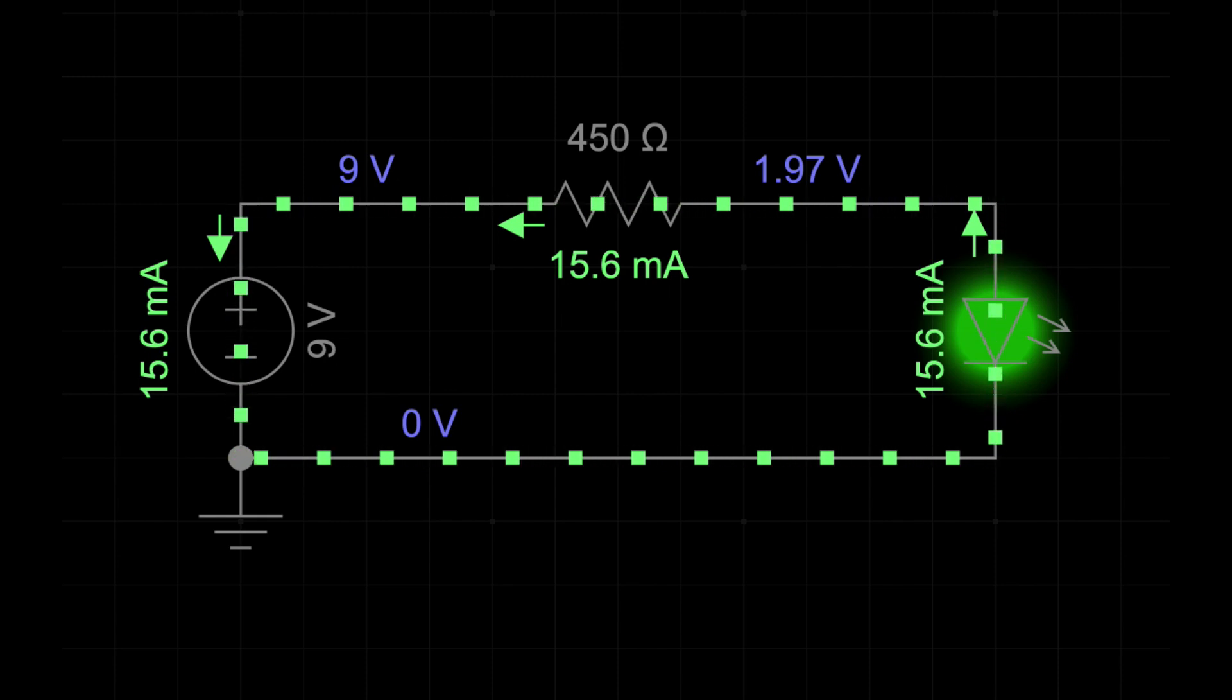As the electric current flows through the circuit, it encounters various components like resistors and LEDs. Each component has its own resistance, which opposes the flow of current.